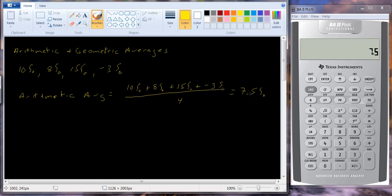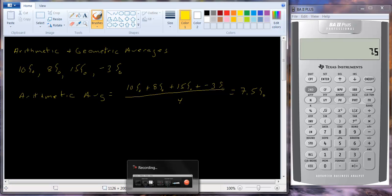The geometric average is a little bit different. In fact, let me tell you what the difference between the arithmetic average and the geometric average is and then we can do a computation. The arithmetic average tells you what was your return in an average year over this time period.